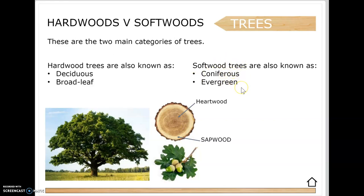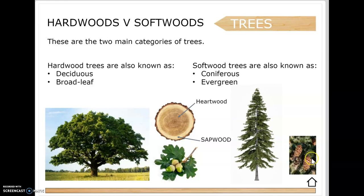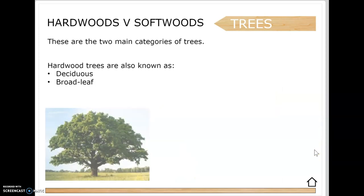We also have coniferous trees, which are evergreen trees - these generally do not lose their leaves and have them all year round. Their general shape is triangular, like a Christmas tree. You'd see these up in the mountains. Softwoods are grown a lot more because farmers grow them to sell - they grow a lot quicker, have piney needle-like leaves and generally have cones on them. In softwoods, the heartwood and sapwood are the same color.